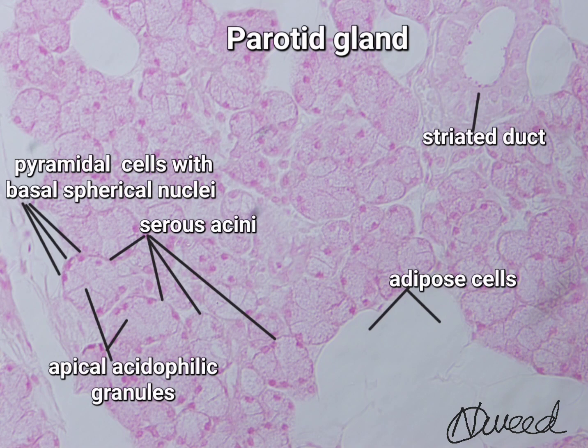The main duct is lined by stratified cuboidal epithelium that changes to stratified squamous non-keratinized near its opening. Adipose cells are abundant in the connective tissue of the parotid gland.